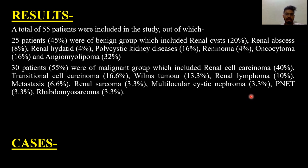30 patients, 55%, were of the malignant group, which included renal cell carcinoma 40%, transitional cell carcinoma 16.6%, Wilms tumor 13.3%, renal lymphoma 10%, metastasis 6.6%, renal sarcoma 3.3%, multilocular cystic nephroma 3.3%, PNET 3.3%, and rhabdomyosarcoma 3.3%.